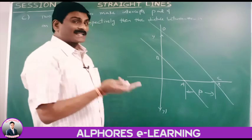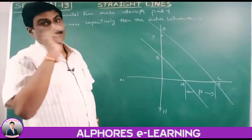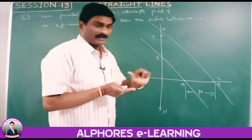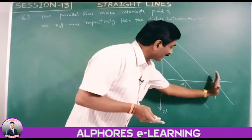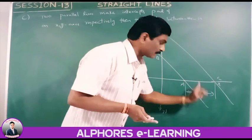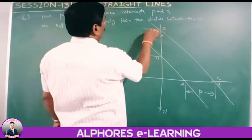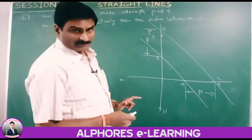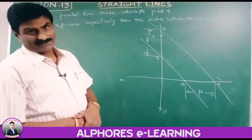Since AEDB is a parallelogram (the two lines are parallel), the segment AE on the x-axis equals Q units as well. Using the right triangle ACE where AC equals P and AE equals Q with a right angle between them, we proceed to find the perpendicular distance H between the parallel lines.